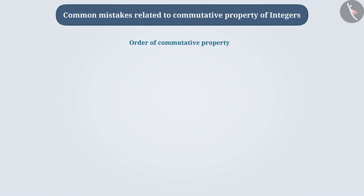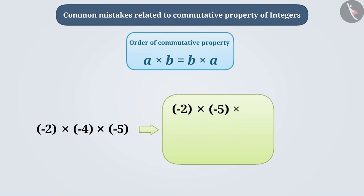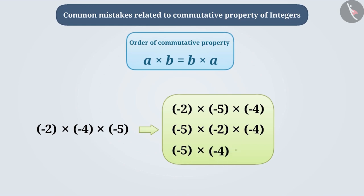The rule for multiplication under the commutative property is A multiplied by B is equal to B multiplied by A. Many times, children understand that this formula is useful only when two integers are multiplied. Children do not understand that the order of multiplication of more than two integers can also be changed. For example, minus 2 into minus 4 into minus 5 can be written as minus 2 into minus 5 into minus 4, or minus 5 into minus 2 into minus 4, or minus 5 into minus 4 into minus 2. No matter what the order is, the result will always be the same.